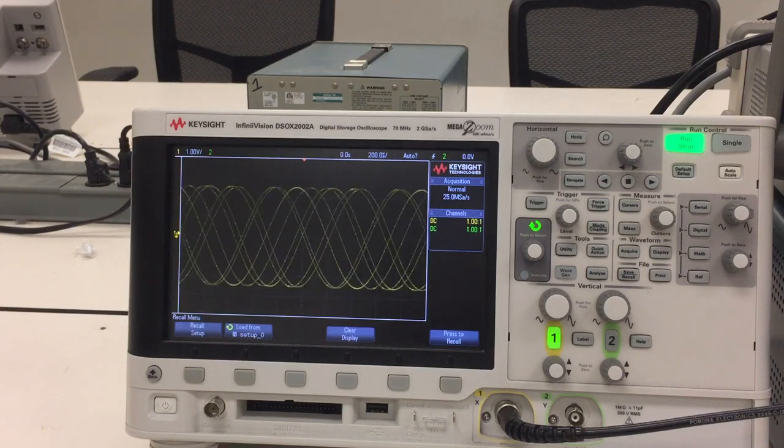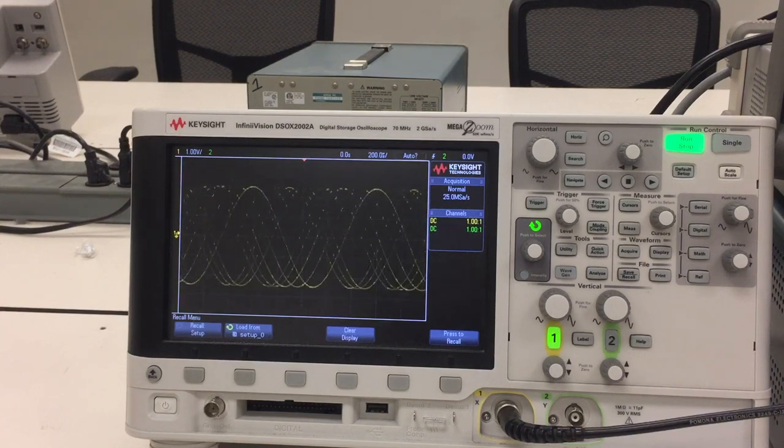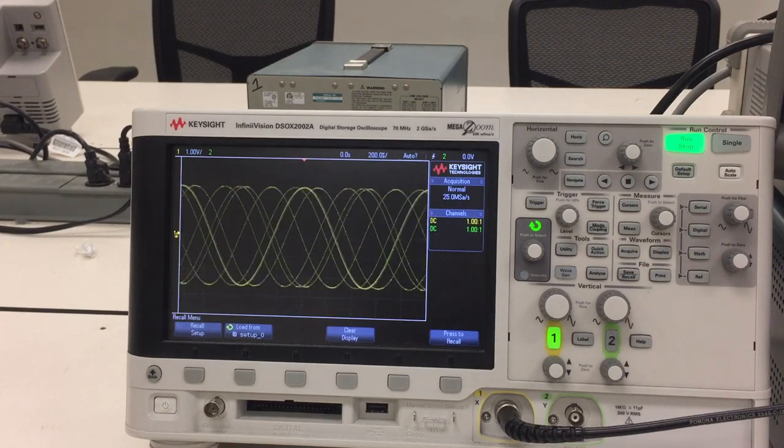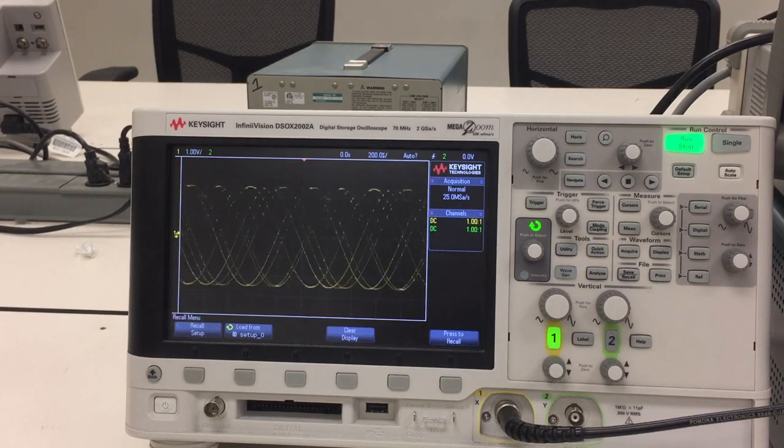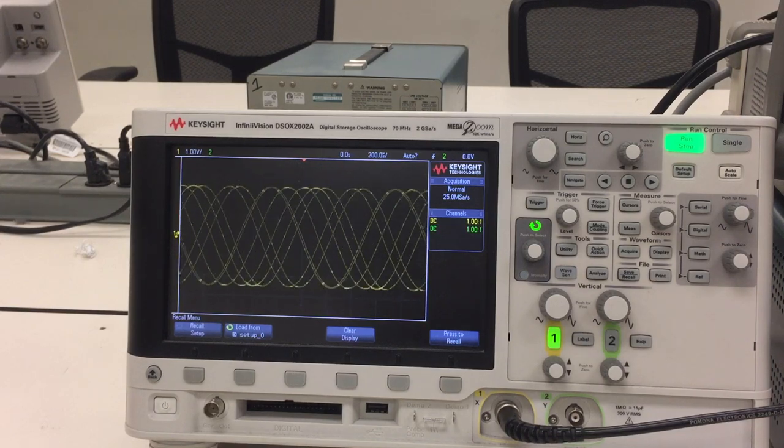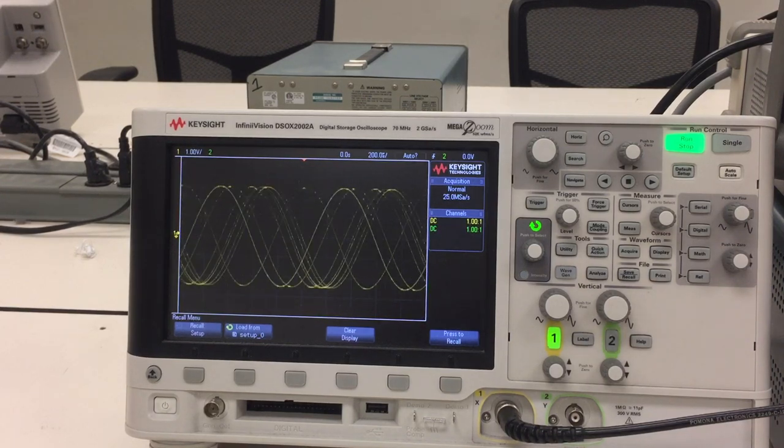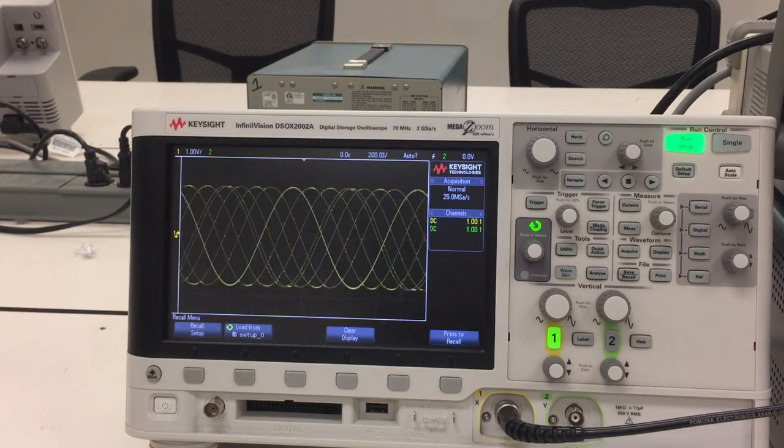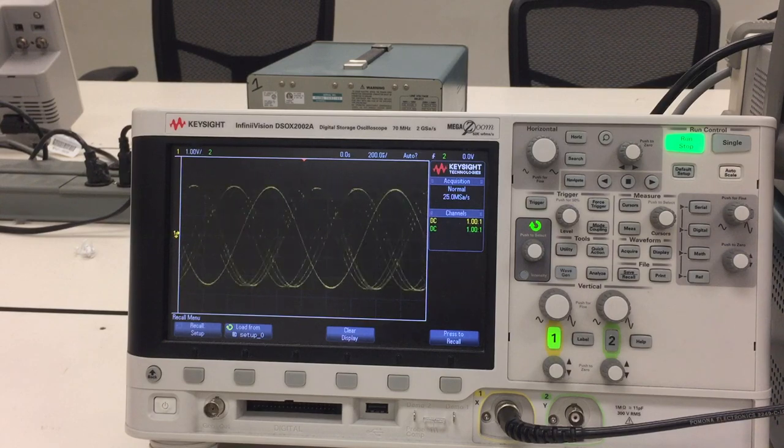Okay, now we're at 1 volt per division, 1 volt per grid. So you can kind of see a sinusoidal shape already, but the signal is not very stable. It's kind of wobbly around on the screen. So we'll talk about why this happened and how we're going to fix this.